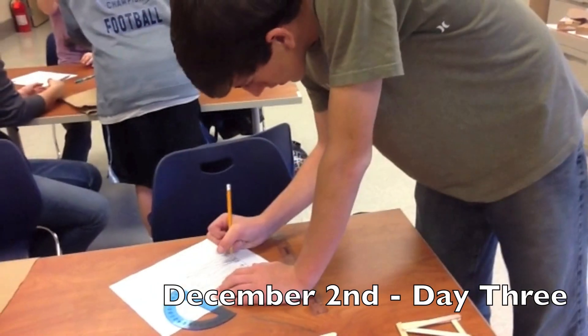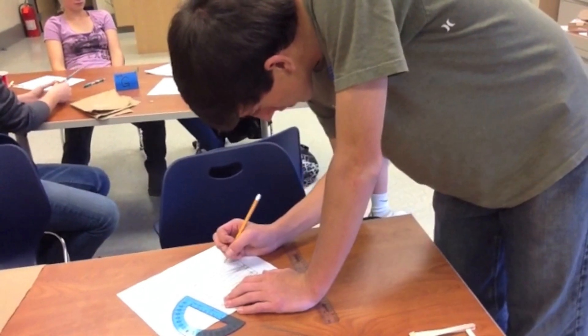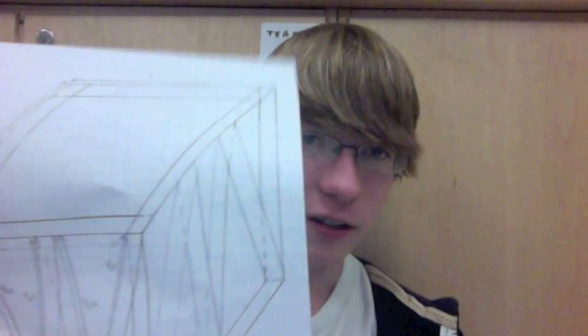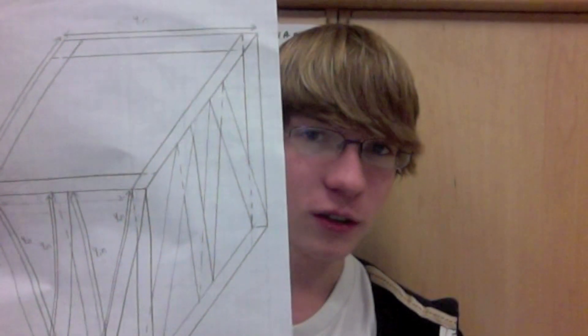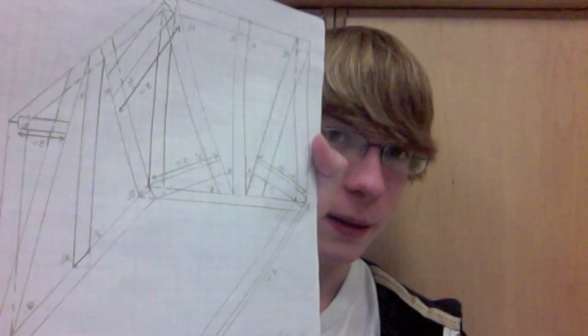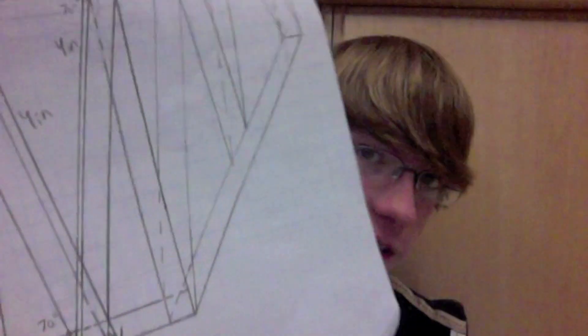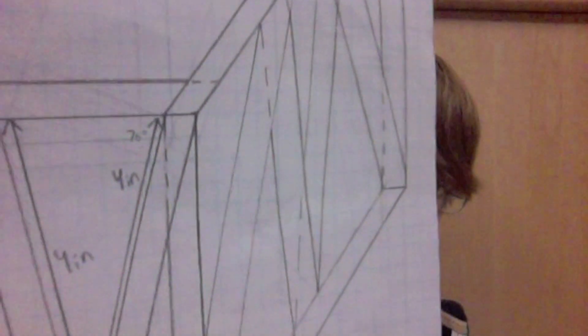Alright, so today is December 2nd, it's Friday and today Dylan finished drawing our second design. This one's a little different than the first. The first one's on the back. And these are just like we were supposed to draw them. They're very detailed. They have the measurements and they have the dash lines to show depth and then it also has the degrees.